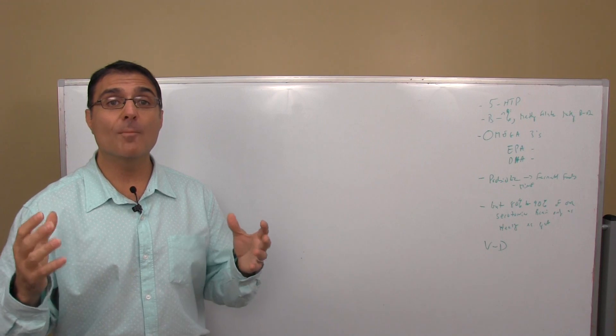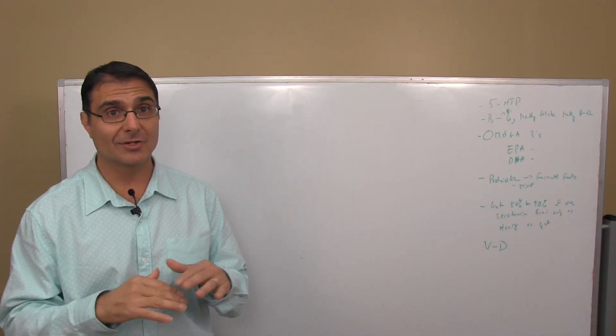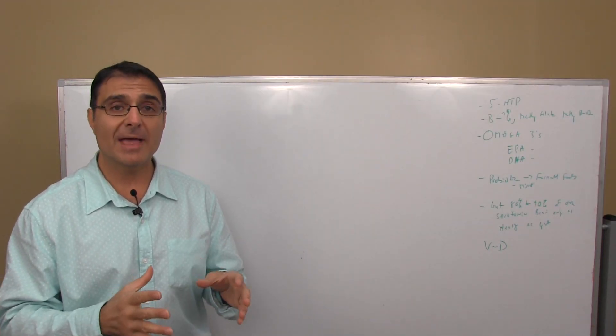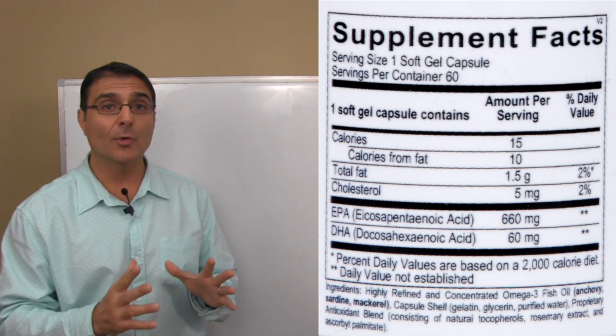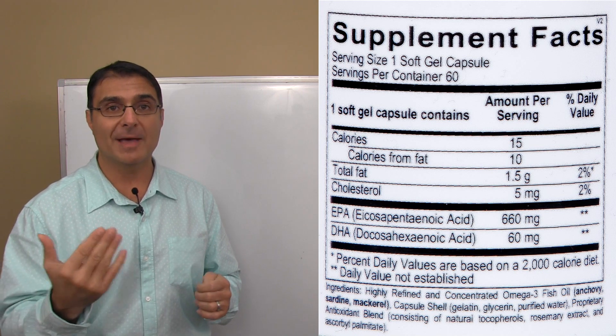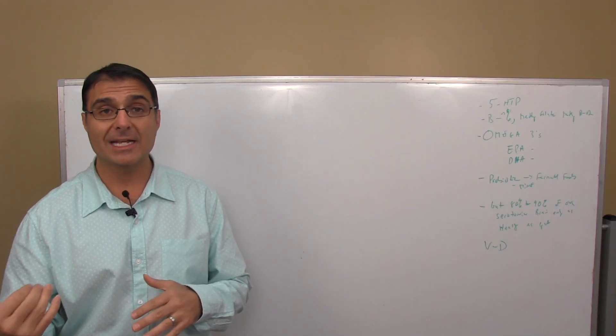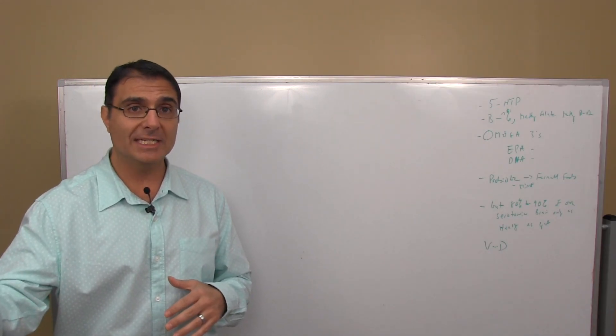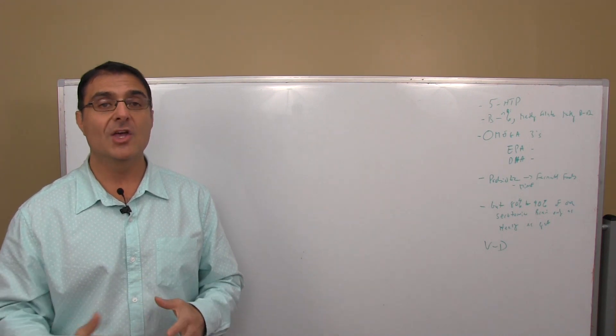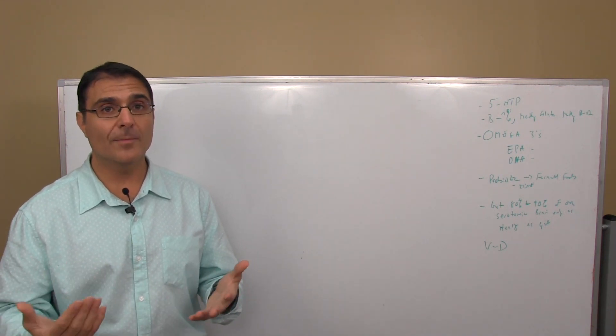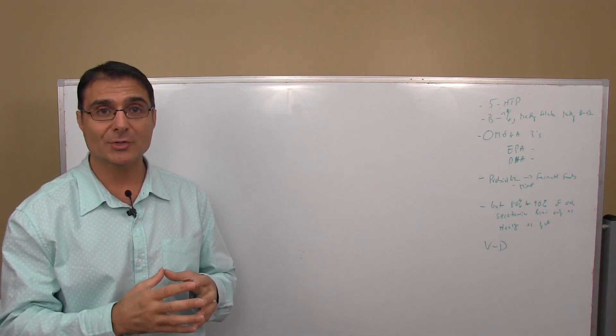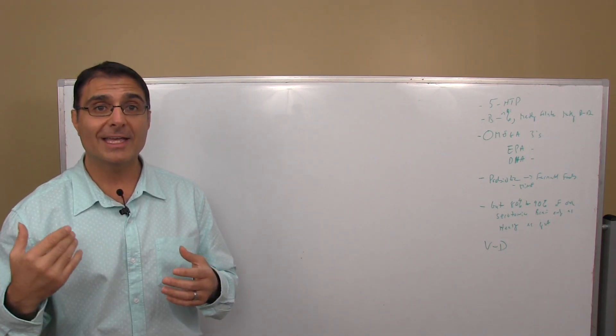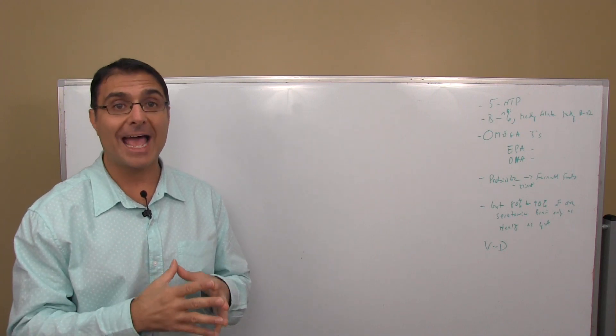Number three, omega-3 fatty acids. But which kind? Because they're not all the same. We want an omega-3 fatty acid that's high in EPA and lower in DHA when we're talking about depression. If we're talking about anxiety, you actually want higher DHA and less EPA. And why is that so important? It's the omega-3 fatty acids that help to soften and improve the structure of the brain cell so that way the serotonin can gain access.